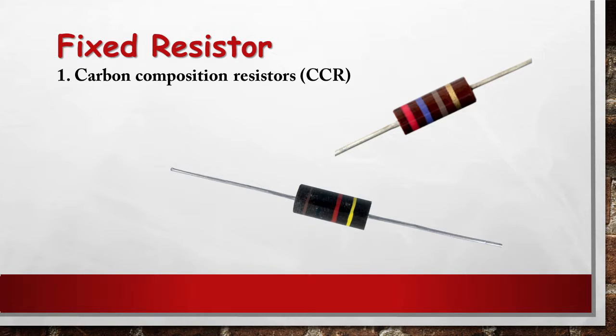The resistive element is made from a mixture of finely powdered carbon and an insulating material, usually ceramic. A resin holds the mixture together. The resistance is determined by the ratio of the fill material, the powdered ceramic, to the carbon. Higher concentrations of carbon, which is a good conductor, result in lower resistance. Carbon composition resistors were commonly used in the 1960s and earlier, but are not popular for general use now as other types have better specifications, such as tolerance, voltage dependence, and stress.